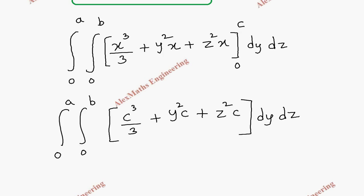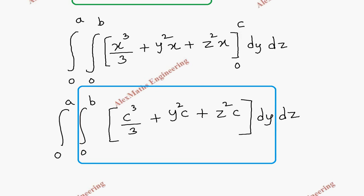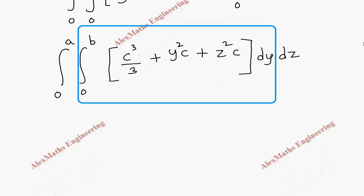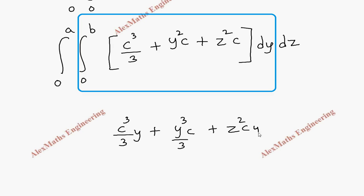Now as a second part, we are going to integrate with respect to y. Other than y are treated as constants. The constant c cube by 3, integrated with respect to y, becomes c cube by 3 times y. y square integration gives y cube by 3. The constant z square times c, integrated with respect to y, becomes z square times c times y. Now we apply the limit from 0 to b.